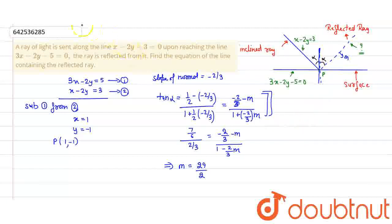Our reflected ray will be, I am writing with the black. The reflected ray equation will be y minus y1 equals 29/2 times x minus x1. For this, that is 29x minus 2y minus 31. So, this is the equation of reflected ray.